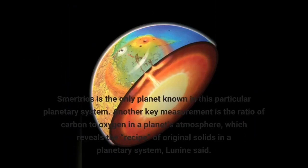Smertrios is the only planet known in this particular planetary system. Another key measurement is the ratio of carbon to oxygen in a planet's atmosphere, which reveals the recipe of original solids in a planetary system, Lunine said.